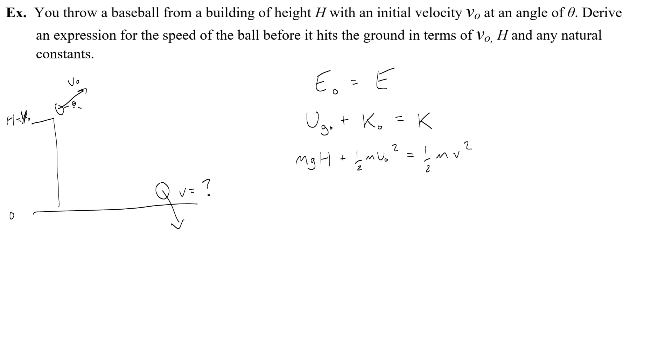The AP test wants me to get rid of mass because it's not one of the terms, and then I multiply both sides by two. 2GH plus V₀² equals V². This is exactly what we had last time except now I'm using H instead of Y₀. Take the square root, and boom. I have V₀, H, and any natural constants, aka little g. Good job, easy problem.